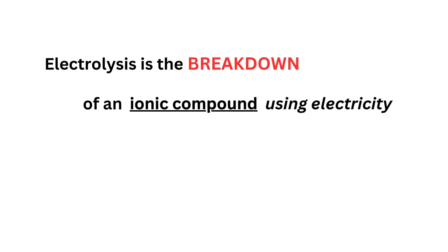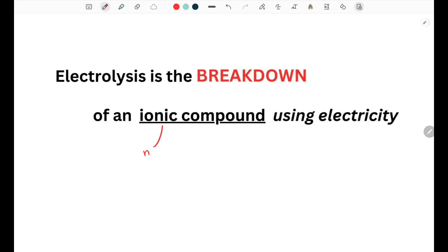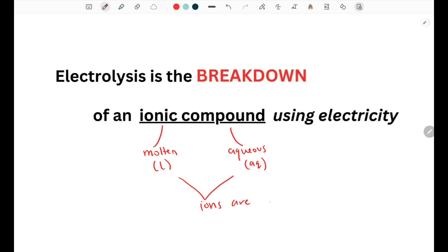Electrolysis is the breakdown of an ionic compound using electricity. The ionic compound could either be in molten state, given by the liquid state symbol, or it could also be in aqueous state, in which ions are able to move, meaning that the compound can conduct electricity, which will enable the process of electrolysis to occur.